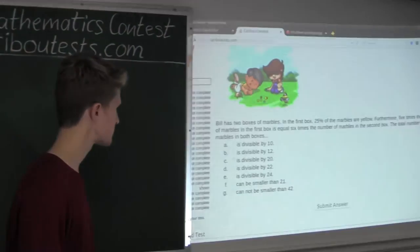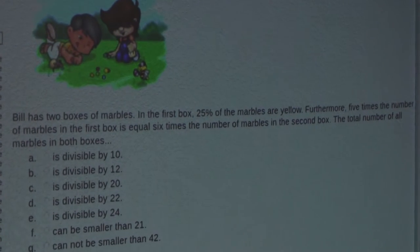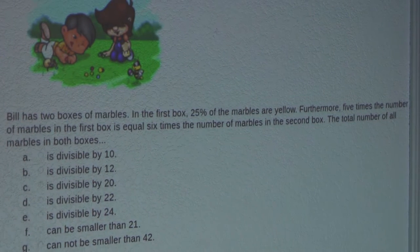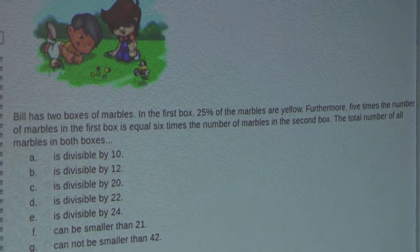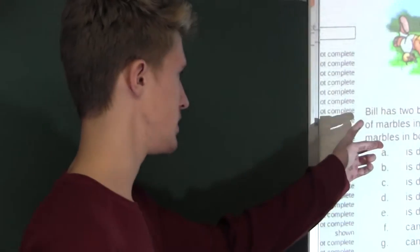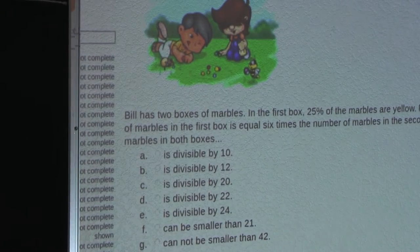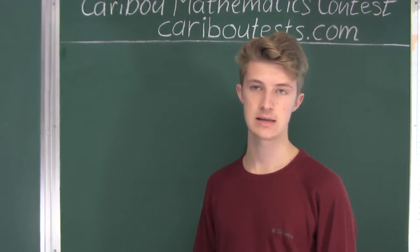So the question is: Bill has two boxes of marbles. In the first box, 25% of the marbles are yellow. Furthermore, 5 times the number of marbles in the first box is equal to 6 times the number of marbles in the second box. Let X be the number of marbles in the first box, and let Y be the number of marbles in the second box.